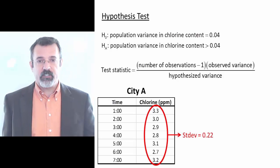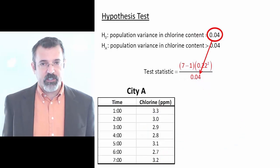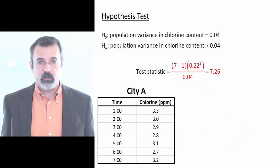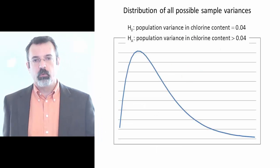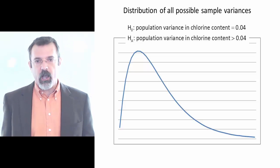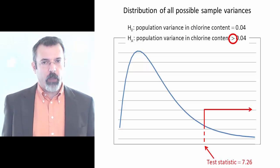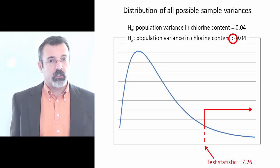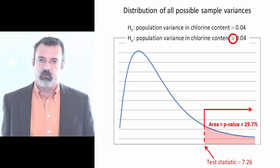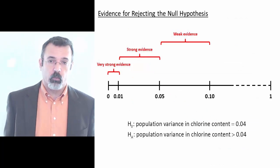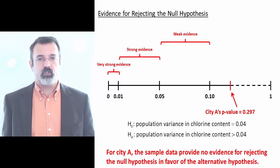For city A, we have a standard deviation of 0.22. Squaring that gives our observed variance. We have seven observations, and our hypothesized variance is 0.04. Putting these together gives a test statistic of 7.26. Sample variances are chi-squared distributed with degrees of freedom equal to the number of observations minus 1. Since our alternative hypothesis is that the variance is greater than 0.04, we look at the area to the right of 7.26, which is 29.7%. Our p-value is 0.297, so we conclude there is no evidence to reject the null hypothesis for city A.